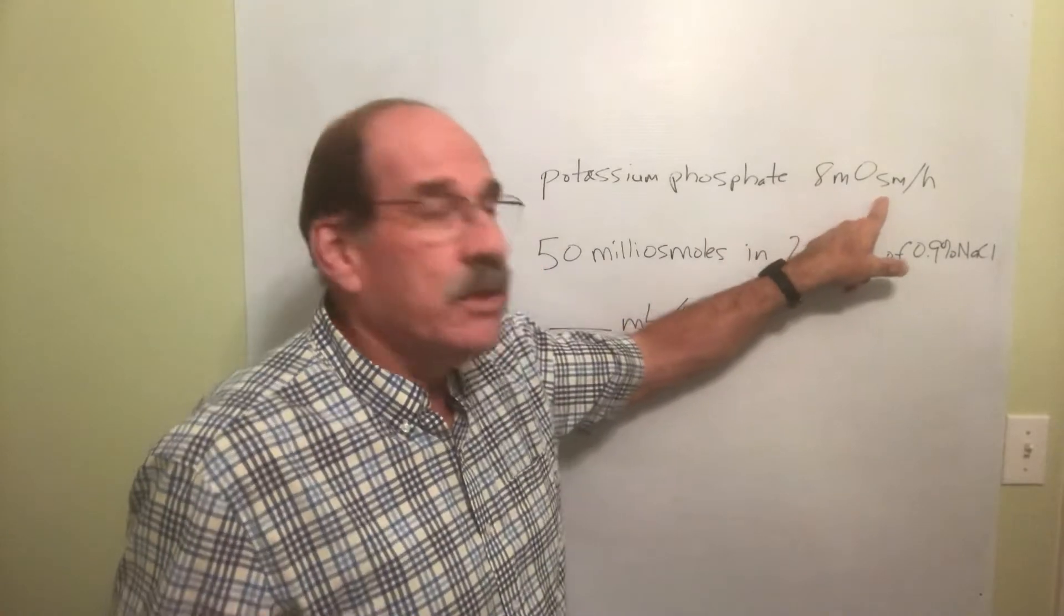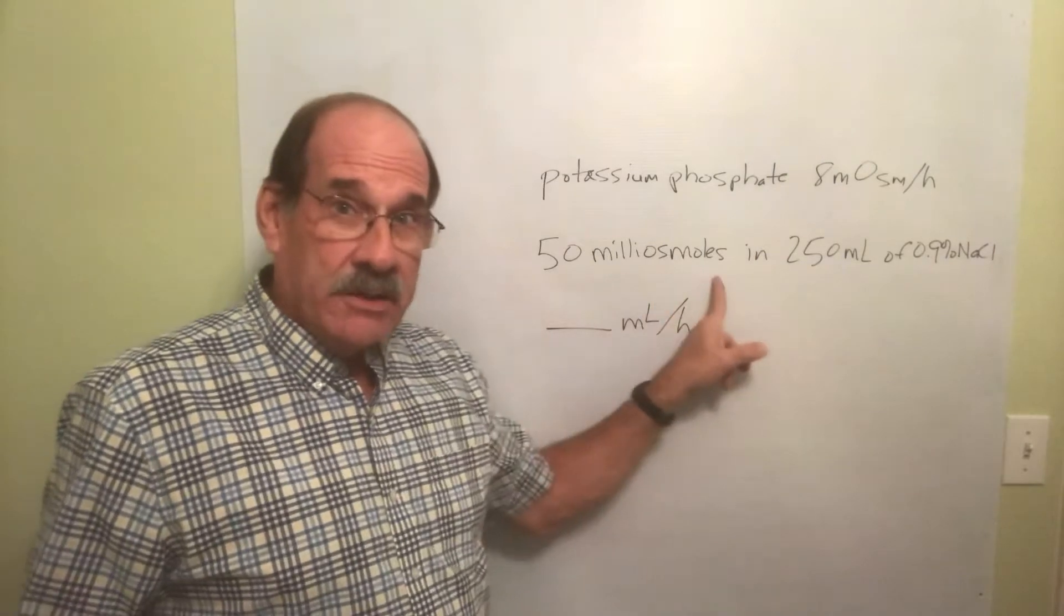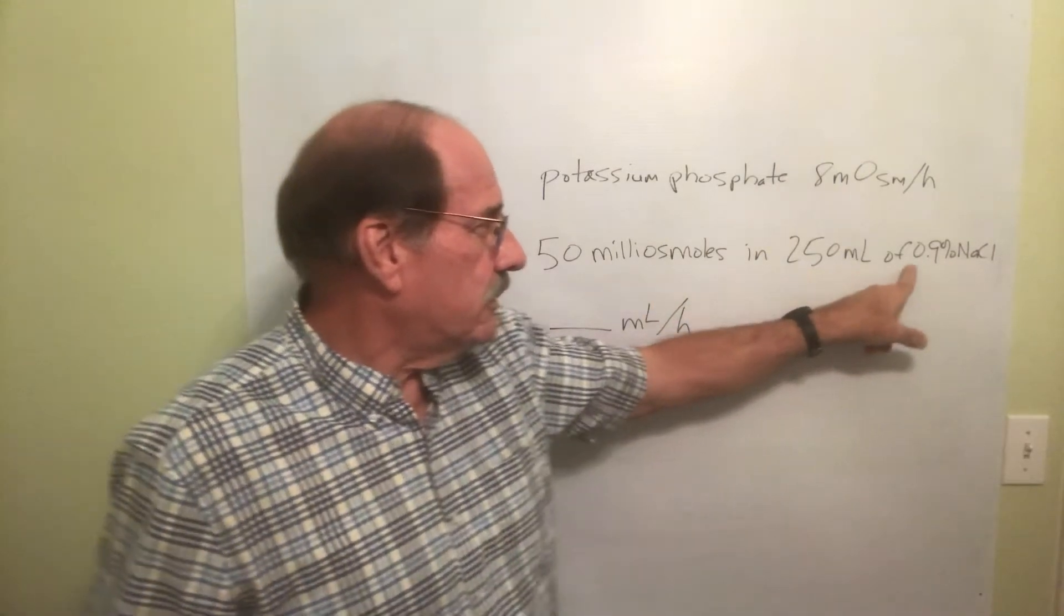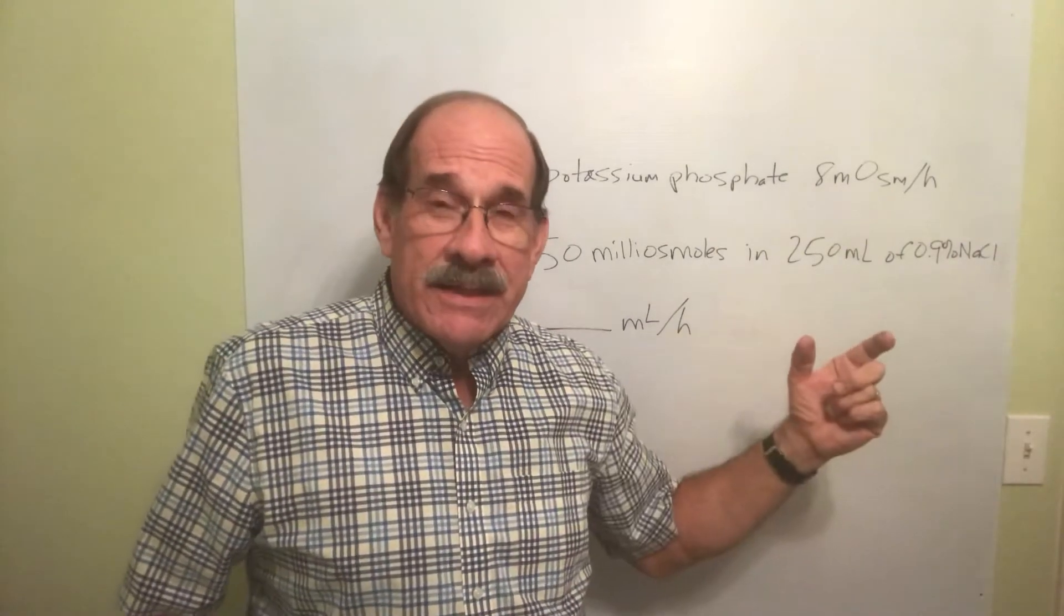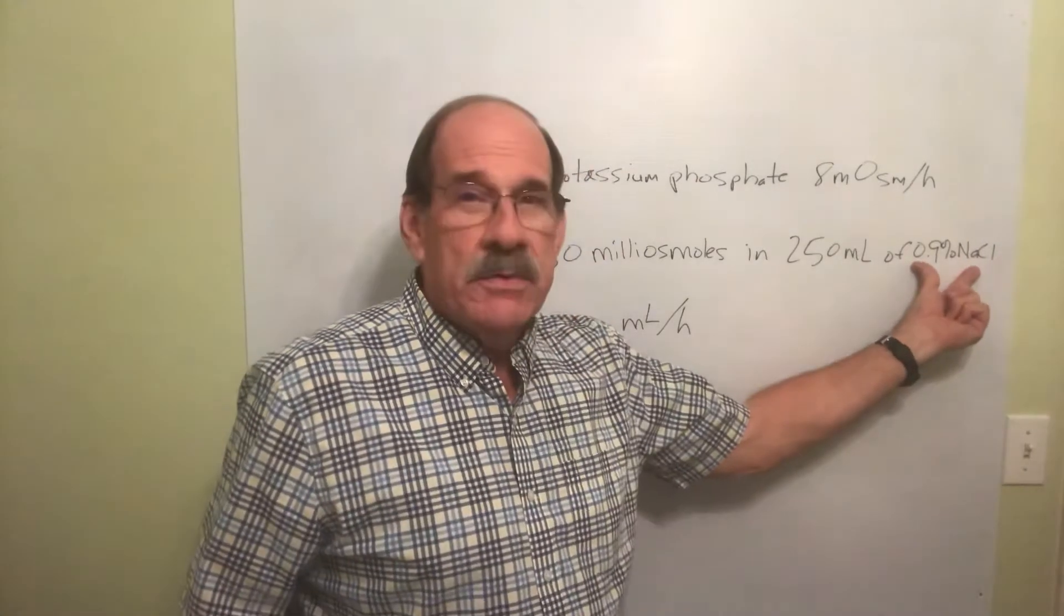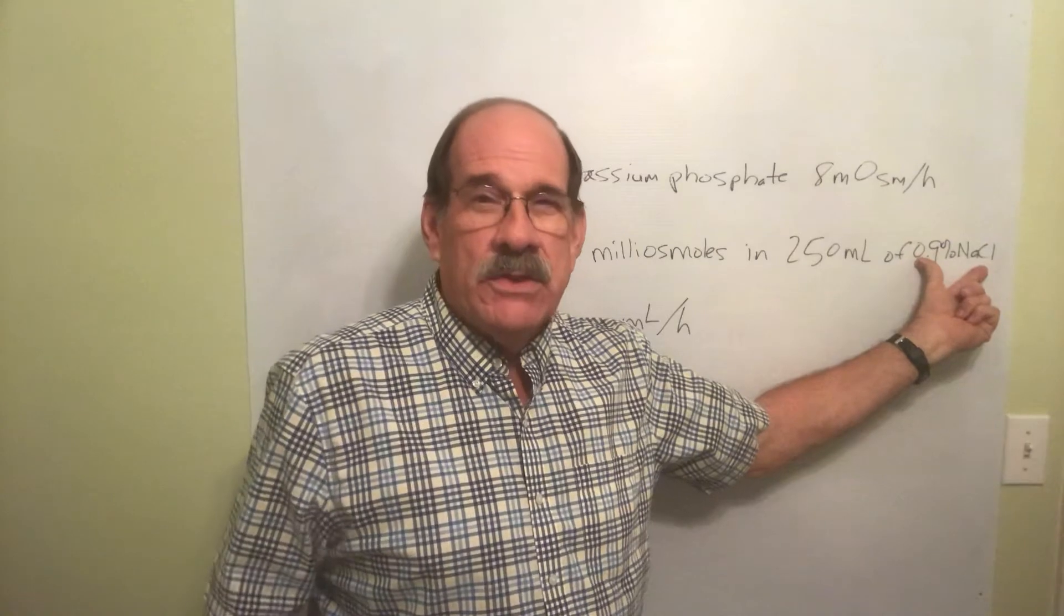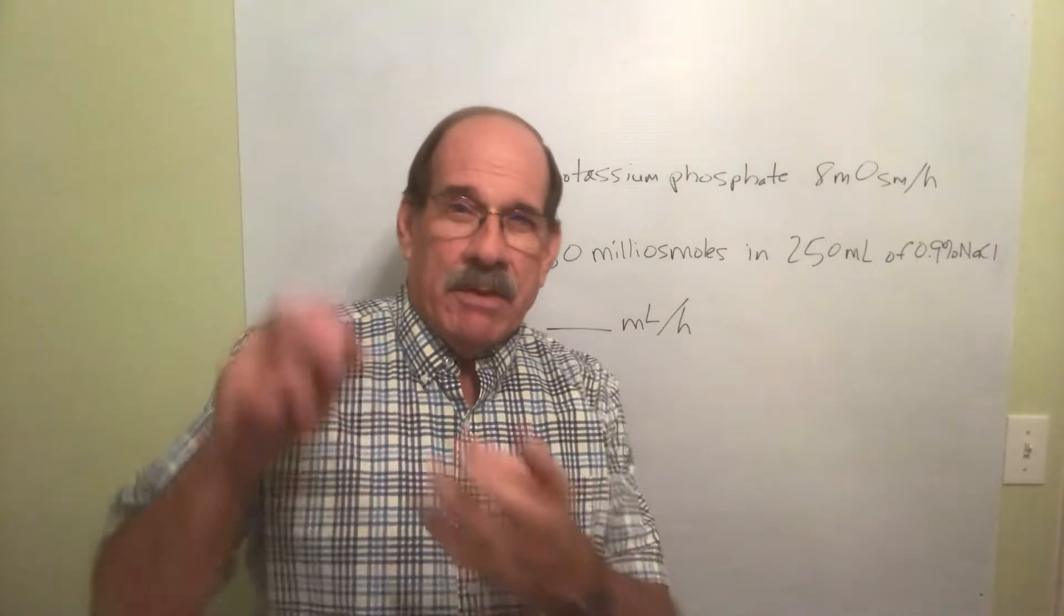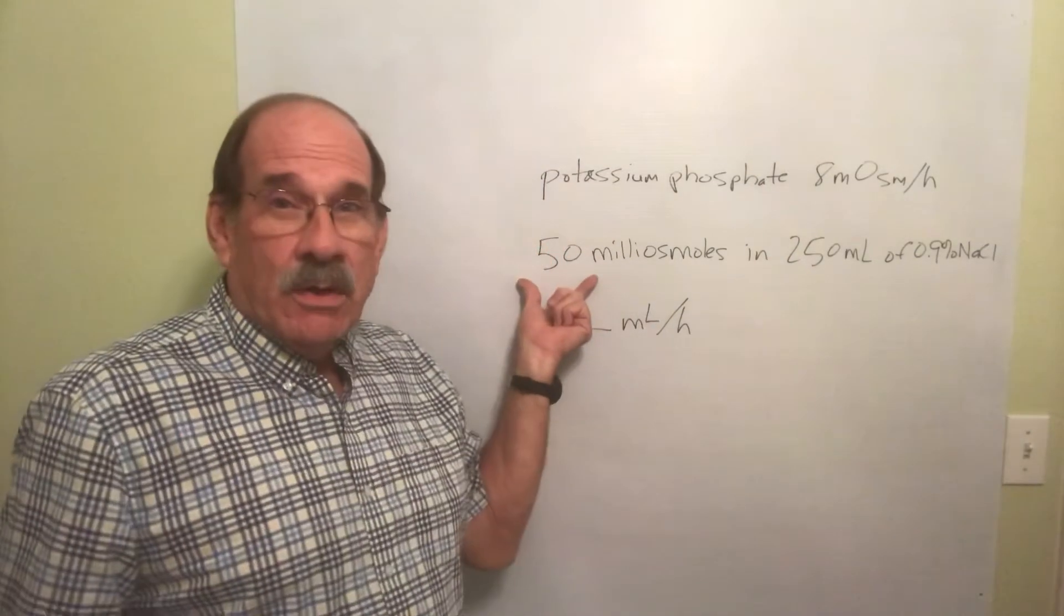And I've got 50 milliosmoles dissolved in 250 milliliters of this 0.9% NaCl. Now let me caution again, many times the names of the IV fluids will have numbers in them. That number is not a part of the problem. That's just the name of the IV fluid. So how strong is the stuff I've got that I'm gonna give my patient to drip into that patient's body? It's this strong.